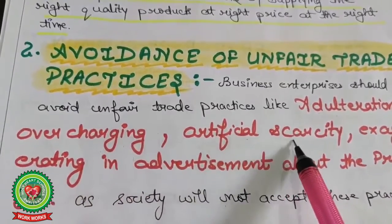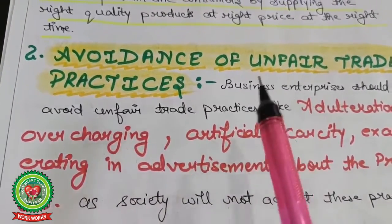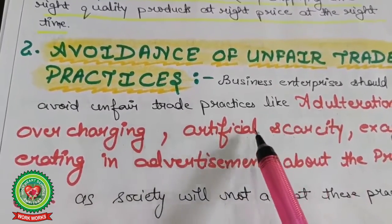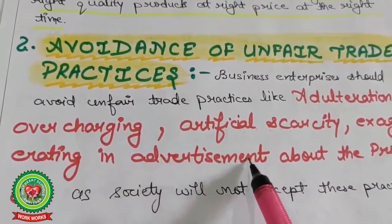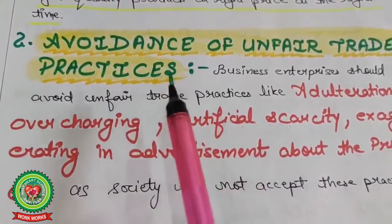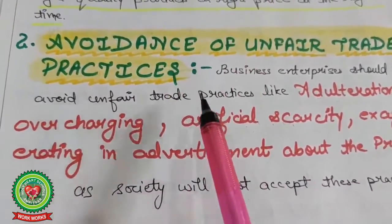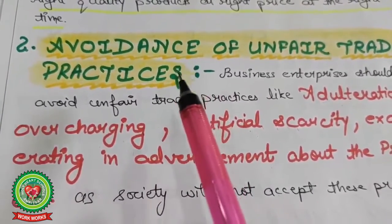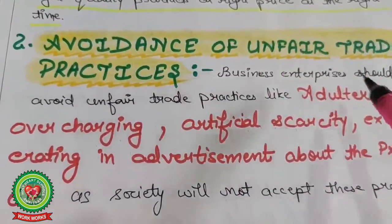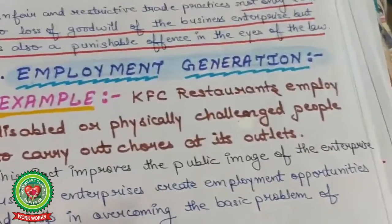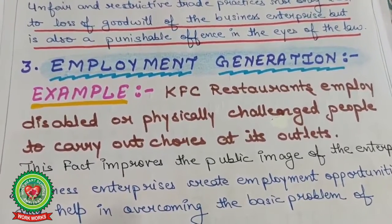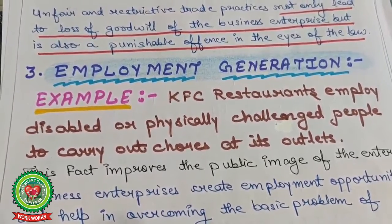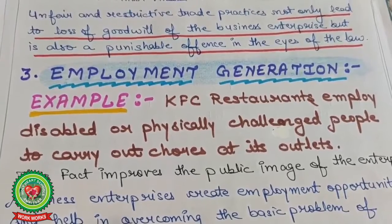When the seller hoards goods and then sells at a higher price during shortage in the market — that is artificial scarcity. Exaggerating in advertisement means showing everything of very good quality in the advertisement, but when you ultimately receive the product, it is not of that quality. Unfair and restrictive trade practices not only lead to loss of goodwill of the business enterprise but are also a punishable offense in the eyes of law.